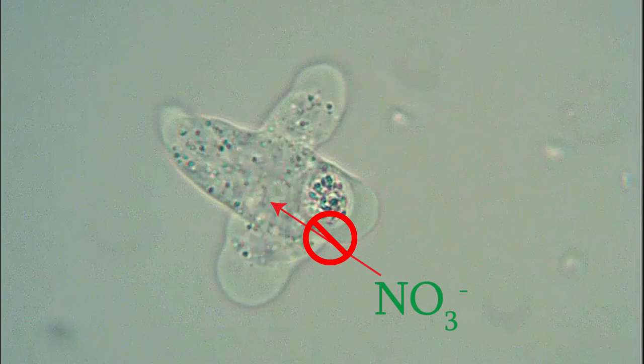Instead, water will flow out of the cell. It's as though the tiny amount of water in the cell is trying to come out and dilute all the solute in the pond. Losing that water will make the amoeba shrivel, and will probably kill it.